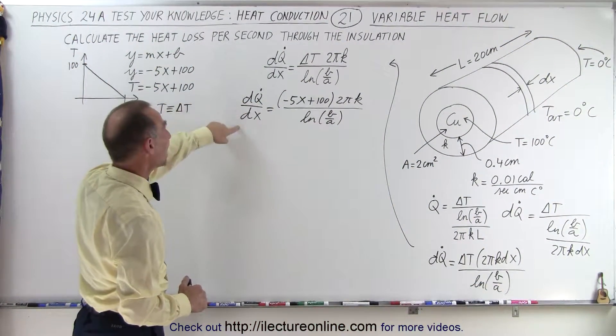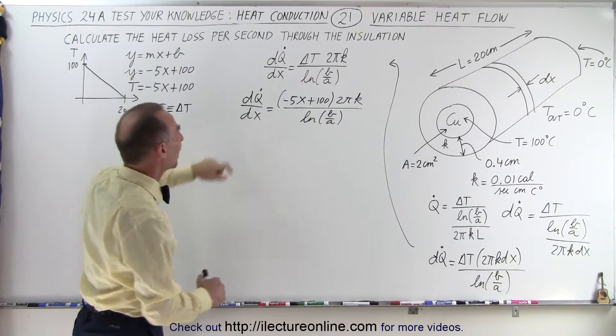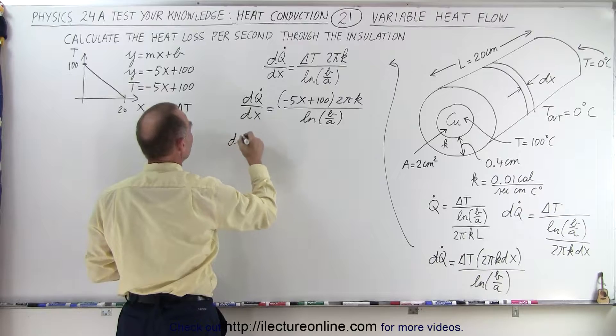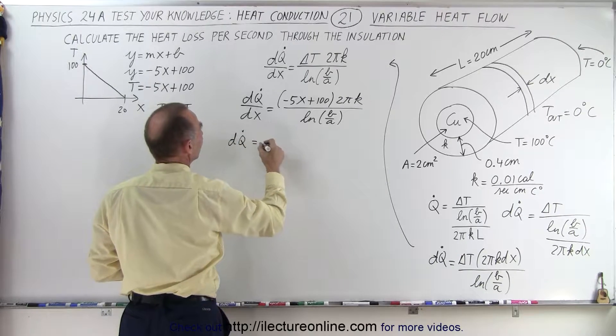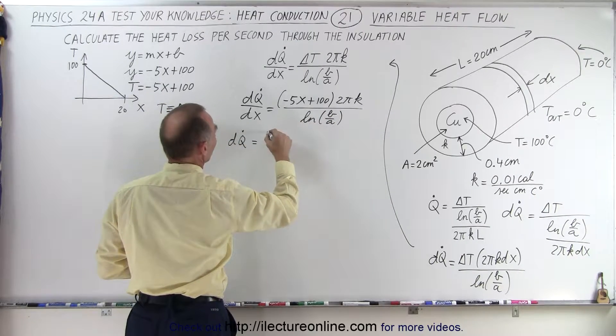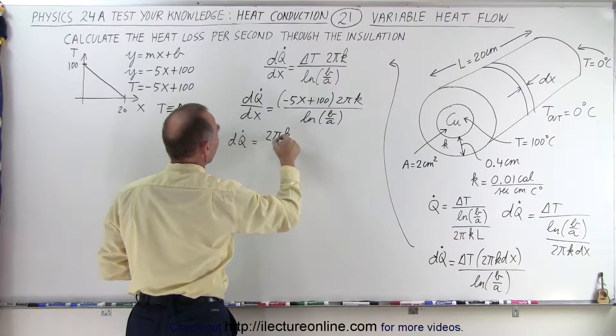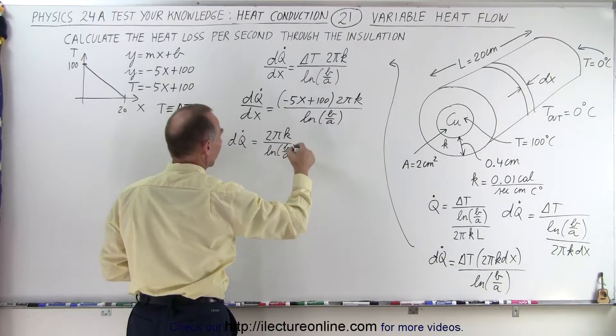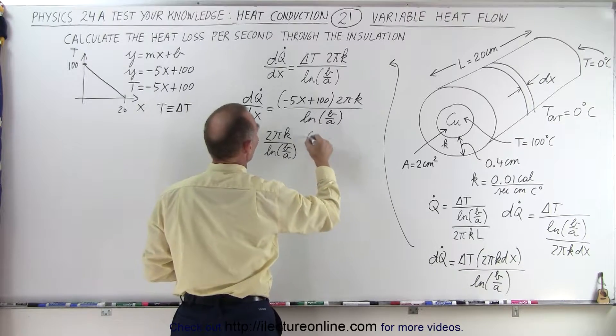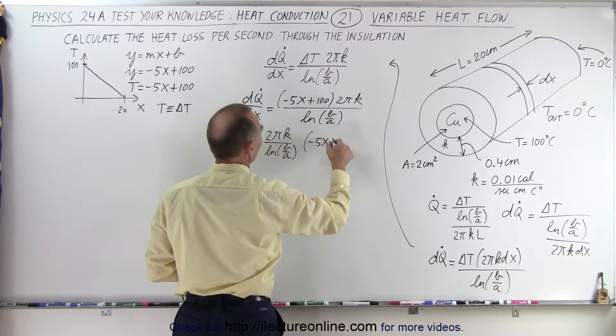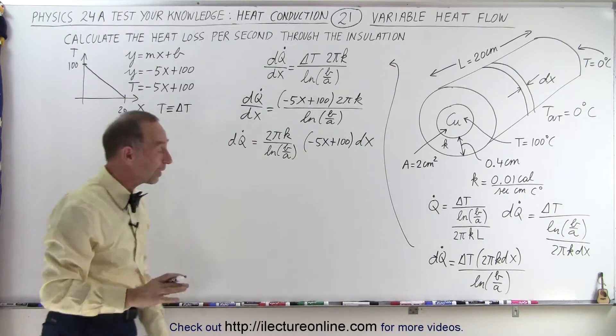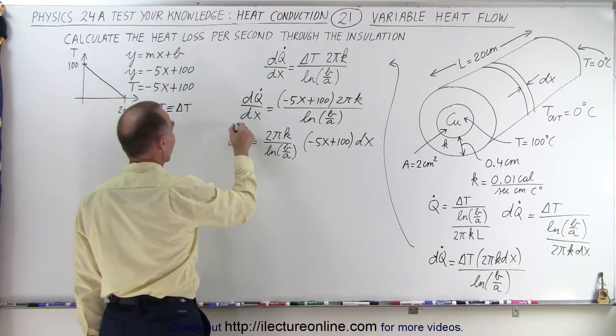Continue with the problem. So we have dQ̇/dx here. What we're going to do, we have an X variable here, we need to separate the variables. So here we can say dQ̇ is equal to the constants 2πK over the natural log of B over A, these are all constants, times the quantity minus 5X plus 100 times dx. And now notice, we can actually integrate both sides.